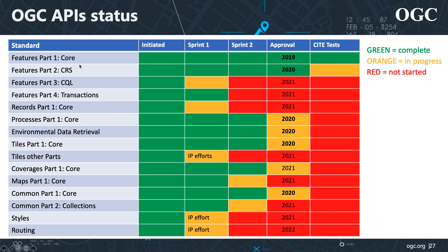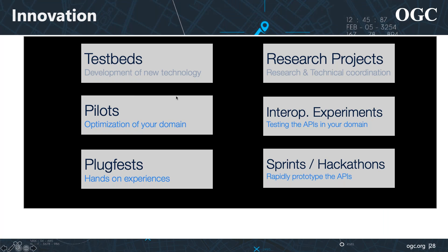Where are we in the development of these standards? OGC API Features Part 1 and Part 2 have been approved and published by the OGC membership, and we have compliance tests for OGC API Features Part 1. The compliance test suite for Features Part 2 is still under development, and work is ongoing on the other OGC API standards. We're using sprints and other innovation program initiatives to rapidly develop these APIs — including test-based pilots, plug-fest research projects, interoperability experiments, sprints, and hackathons.